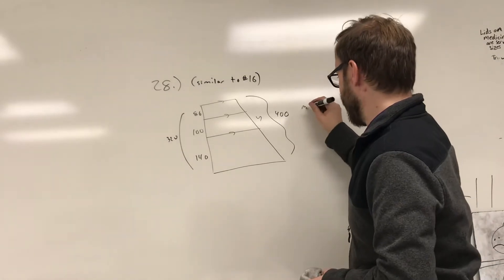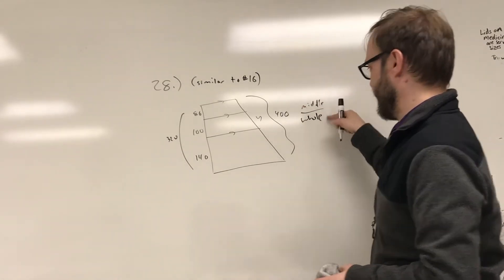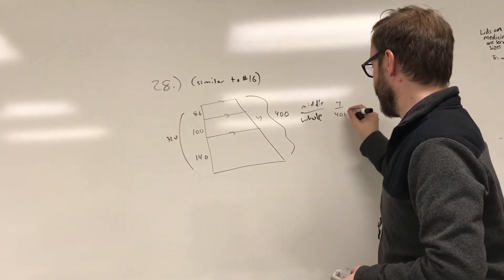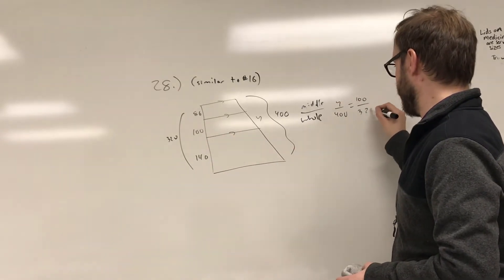So let's do that ratio. The middle part compared to the whole. Always label these things, okay? You're going to make a lot fewer mistakes if you do that. Middle part is y when the whole is 400. The middle part over here is 100 when the whole is equal to 320.